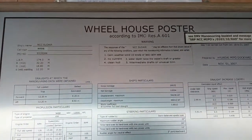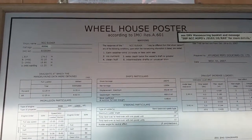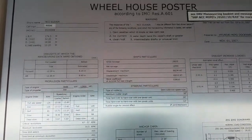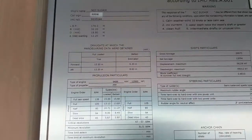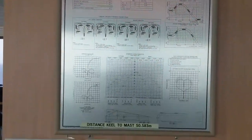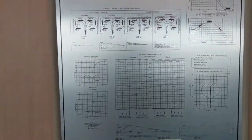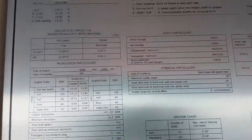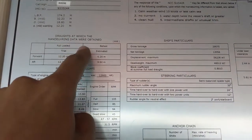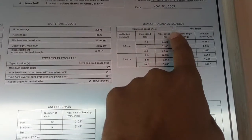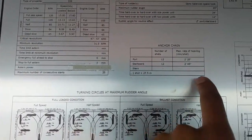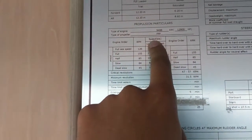This is the wheelhouse poster. According to IMO resolution A.601, a wheelhouse poster should contain general particulars and detailed information describing the maneuvering characteristics of the ship. The information includes: ship particulars, draft at which maneuvering data were obtained, draft increase and squat information, anchor details, zigzag diagram, and propulsion characteristics.